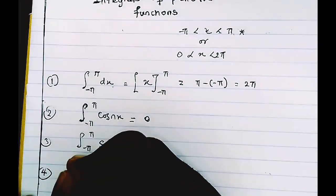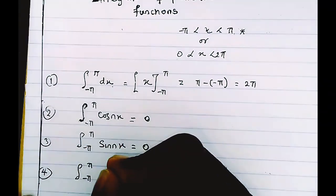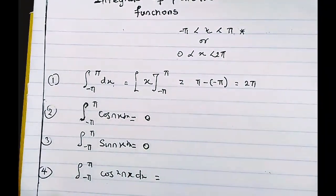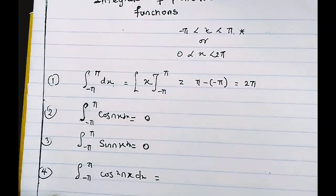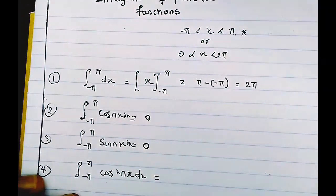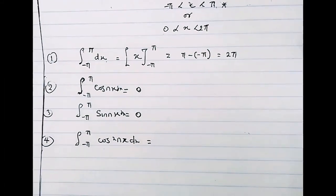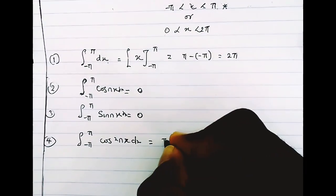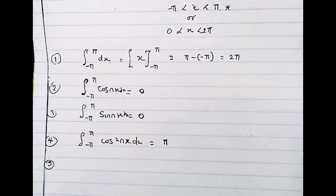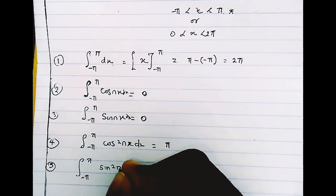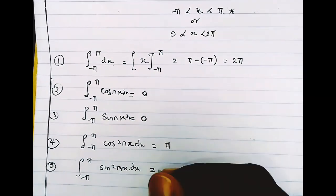The fourth standard integral is the integral from minus π to π of cos²(nx) dx. Remember to include the dx since we are integrating with respect to x. When you integrate this using normal integration and apply the limits, the value is π. The fifth standard integral is the integral from minus π to π of sin²(nx) dx, and the value of this is also π.